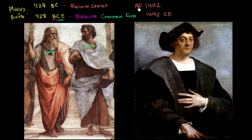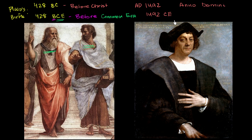AD — some people think it refers to after death. It does not refer to after death. Because if you have years before the birth of Christ, and you started numbering after his death, how would you number the years during his life? So AD does not stand for after death. It stands for anno domini. Anno means year, and domini means Lord. So it's the year of the Lord, or the year of our Lord — years since Jesus Christ's birth, with year one implicitly starting with his birth.